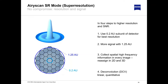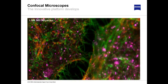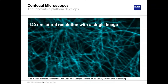Airyscan revolutionized confocal imaging. It increases resolution by a factor of two in all directions — XY and Z — and also increases the signal-to-noise ratio by a factor of four to eight. Sample preparation and labeling stay the same, pushing confocal imaging to the next level in terms of speed, signal-to-noise ratio, and resolution. You can generate very nice quantifiable images with 120 nanometer lateral resolution from a single image.